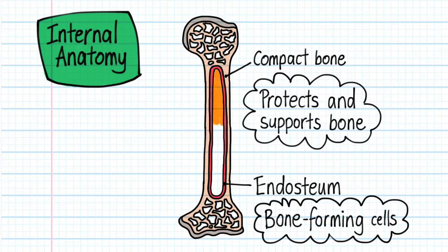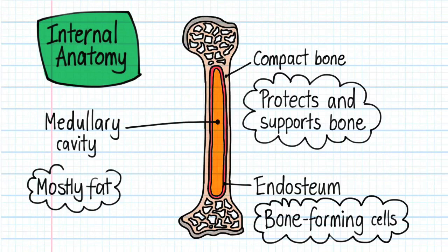The hollow cylindrical space in the middle of the diaphysis is called the medullary cavity. In an adult this cavity is filled with yellow bone marrow which is mostly made of fat cells.